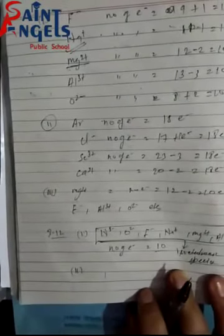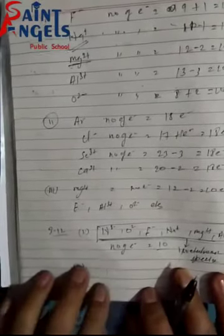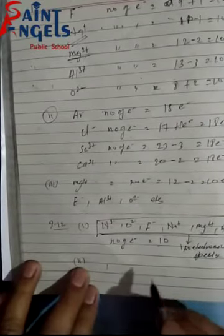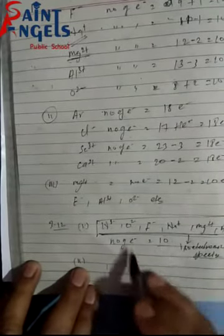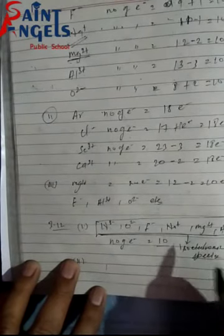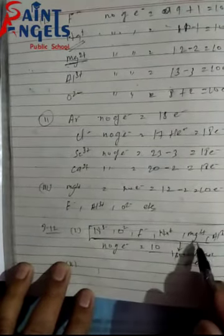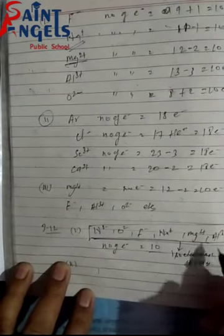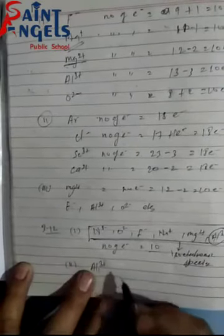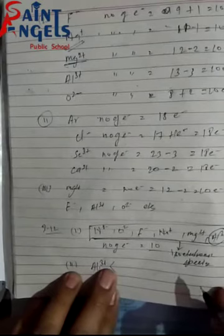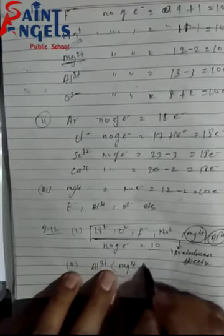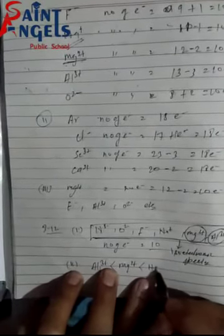Second part of Q3.12: Arrange them in increasing order of ionic radii. Cationic charge जितना ज्यादा होगा, radii उतनी ही small होगी। Greater cationic charge means smaller atomic radii. So Al3+ का radii सबसे छोटा होगा — क्योंकि इस पर सबसे ज्यादा charge है। फिर Mg2+, फिर Na+ — क्योंकि इस पर single charge है।